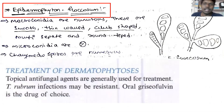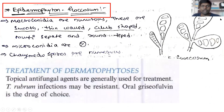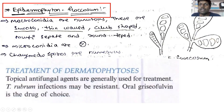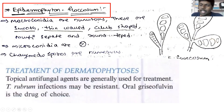The last dermatophyte genus is Epidermophyton, with one species: E. floccosum. It has numerous, smooth, thick-walled, club-shaped macroconidia with multi-septate and rounded tips. There are no microconidia in E. floccosum, and chlamydospores are usually present.